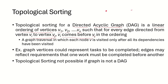So if there are two vertices v1 and vj and there is an edge from v1 to vj, that means in the ordering v1 has to come before vj. It means that vj has a dependency on v1, so v1 is a task that must be completed before we go to vj. This is a graph traversal in which each node v is visited only after all its dependencies have been visited.